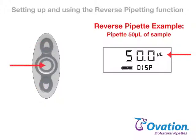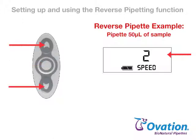Press and release the round button to lock in this new volume setting and advance to the current speed setting. Press and release the up or down arrow until the desired speed is displayed. One is the slowest, five is the fastest.